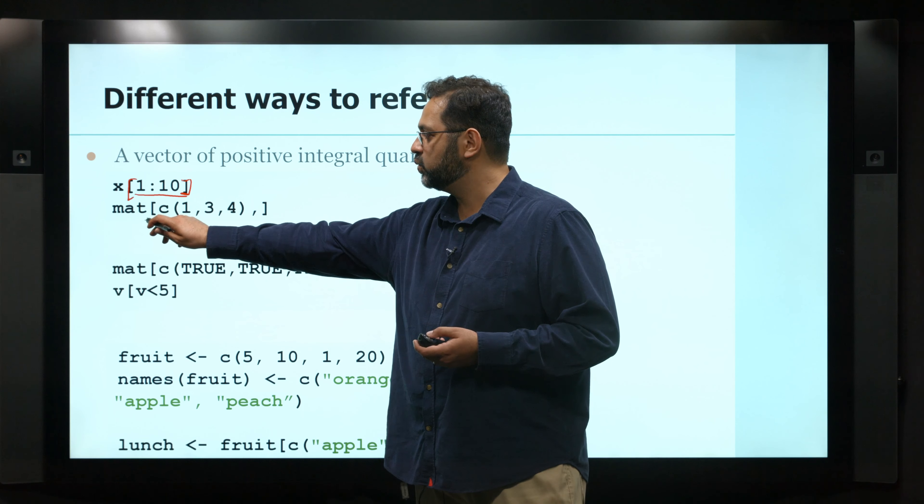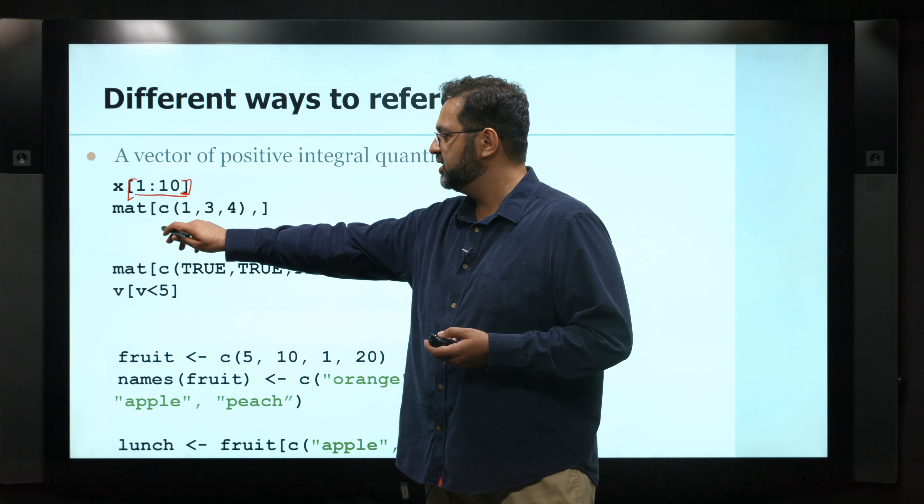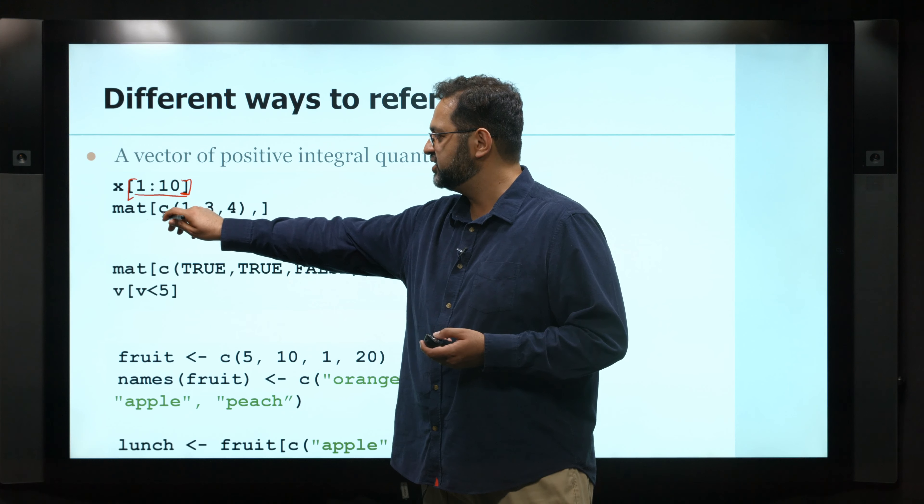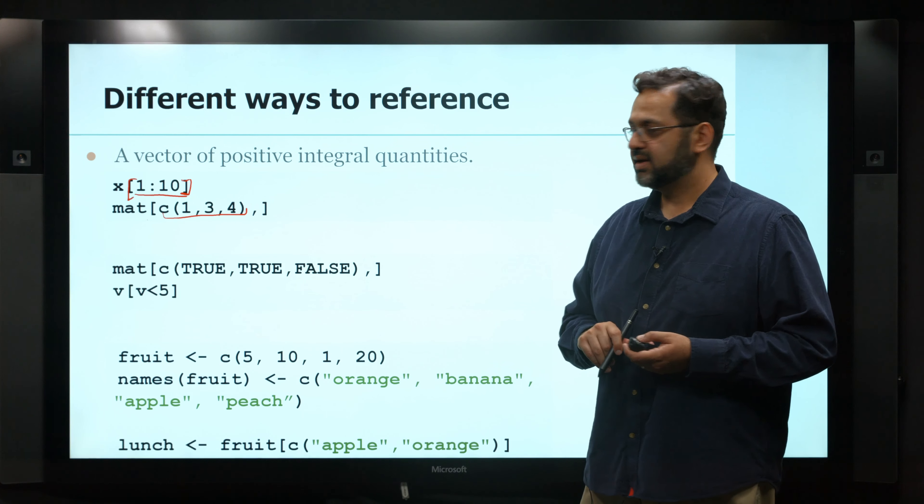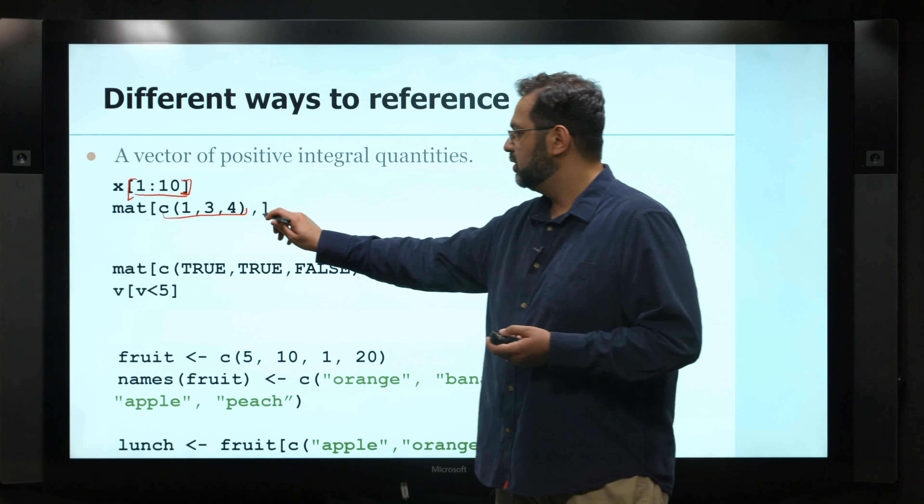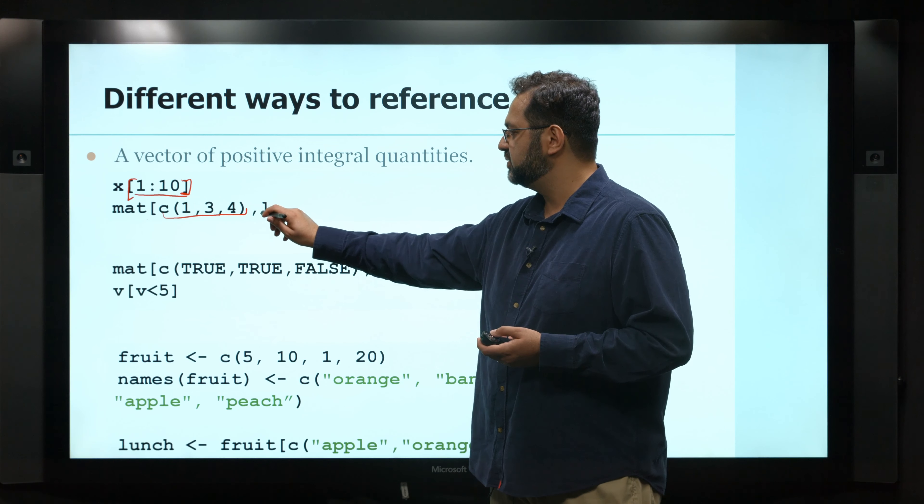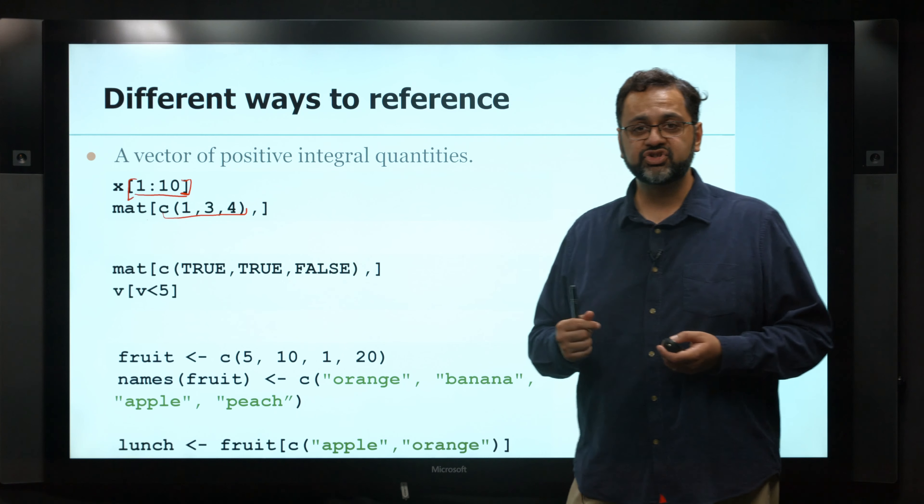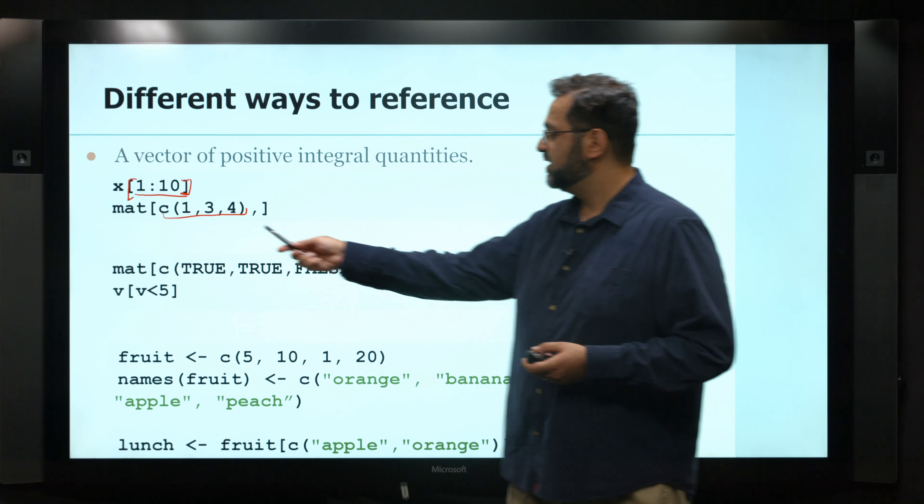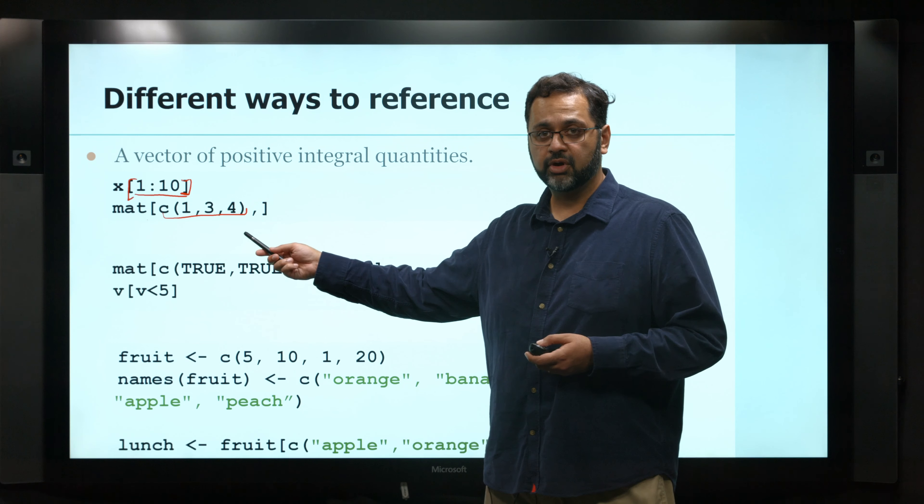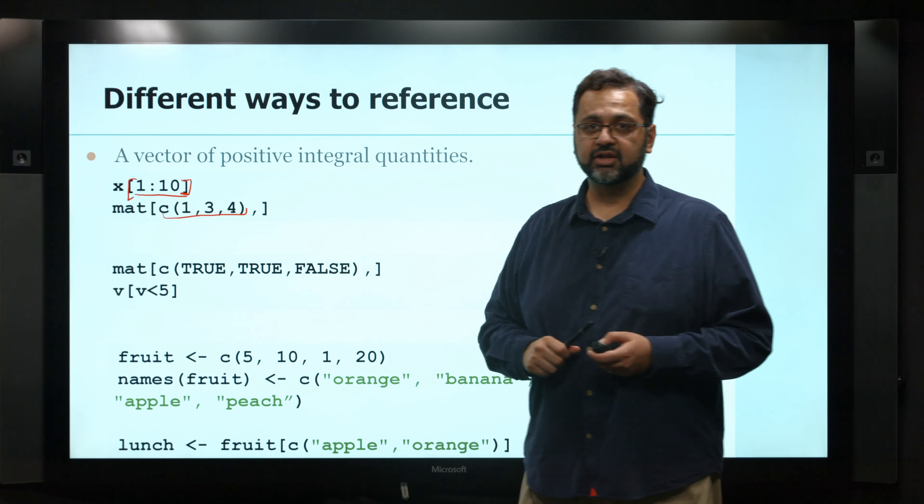This works similarly in the matrix. Here, instead, we can actually specify which rows we want. And in a matrix, we actually can leave out the positions of the dimension if you want all of it. So what this means is give me back the first, third, and the fourth row and all the different columns.